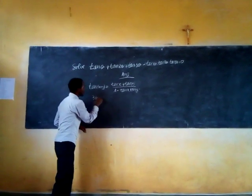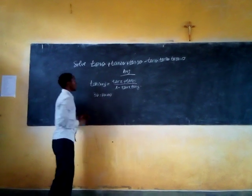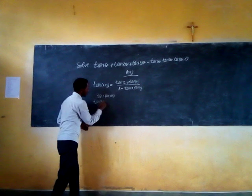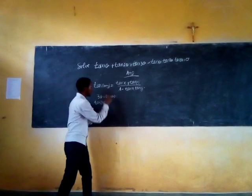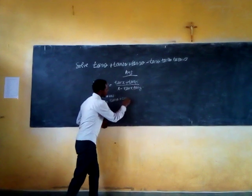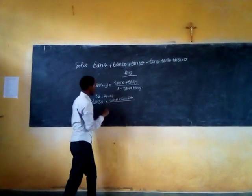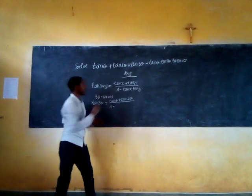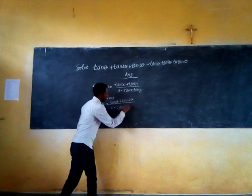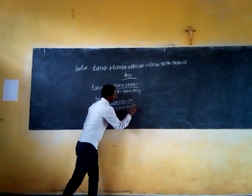Since theta is equal to theta plus theta, we can apply the addition formula. So, tan(3θ) is equal to tan(θ) plus tan(2θ) divided by 1 minus tan(θ) times tan(2θ).